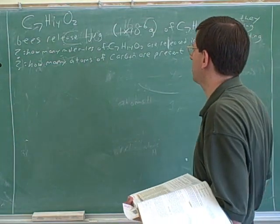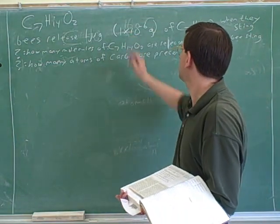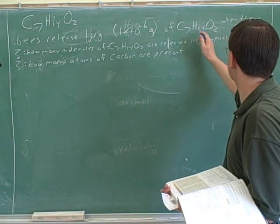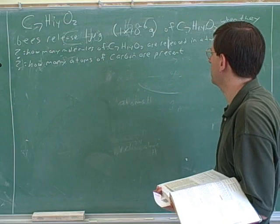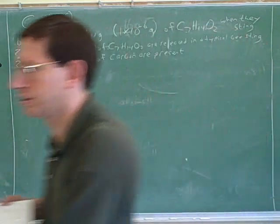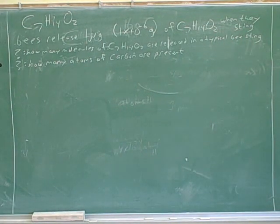So when bees sting, they release 10 to the negative 6 grams of this molecule when they sting. And the question is how many molecules are released in the sting and how many atoms of carbon are present? Let's try working that out on paper.